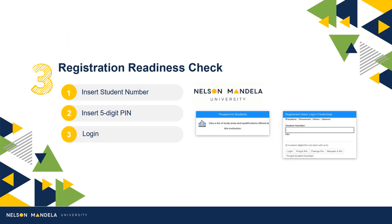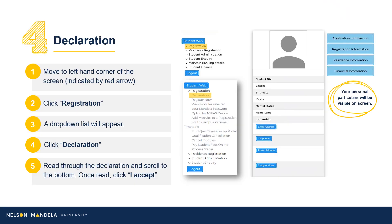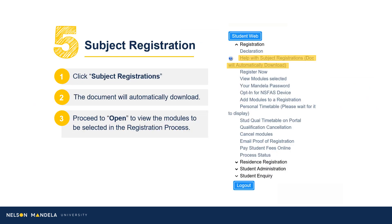Step 3: Make use of your student number and the five-digit PIN to access the registration portal. Step 4: On the right-hand side of your screen, your personal particulars will reflect, and on the left, the steps to registering for your first year. Navigate to registration on the drop-down panel. Proceed to scroll, clicking Declaration. Once read, click I Exit.